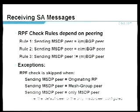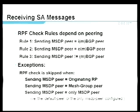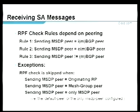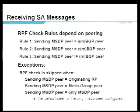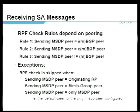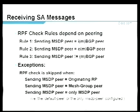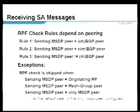There are primarily three rules — really two, with exceptions. Sometimes you have an MSDP peer within your domain, sometimes outside your domain, and sometimes without a BGP peer at all. MSDP's RPF checking is based upon BGP. Three exceptions exist: when you're peering directly with the originating RP (no loop possible, skip RPF check); when your MSDP peer is a mesh group peer (skip RPF check); and when your MSDP peer is your only MSDP peer (no loop possible, skip RPF check).